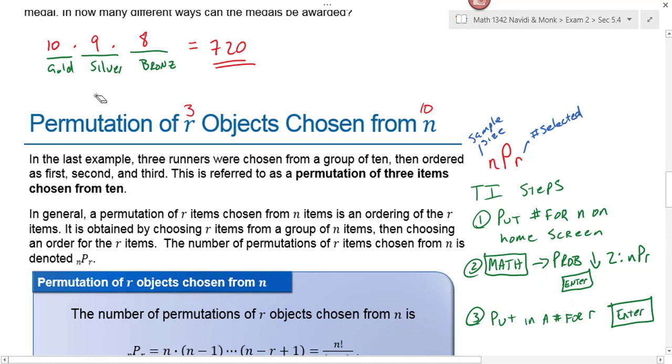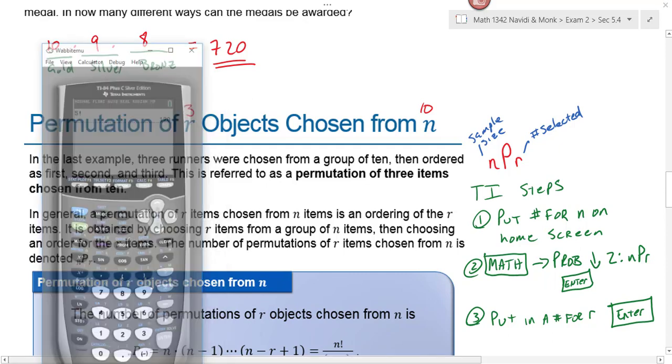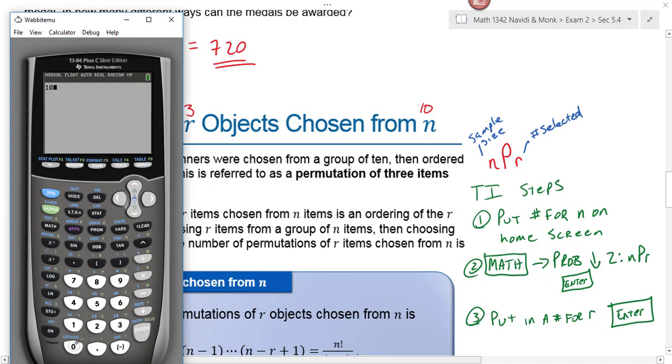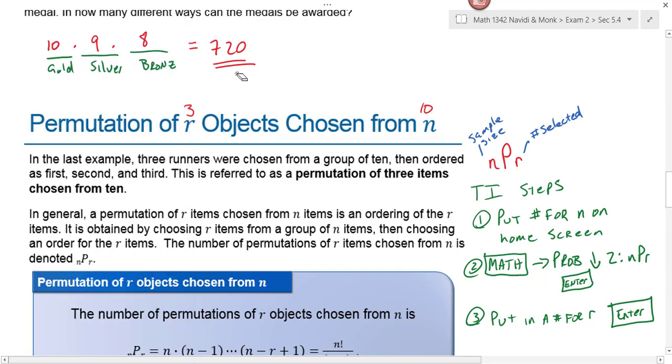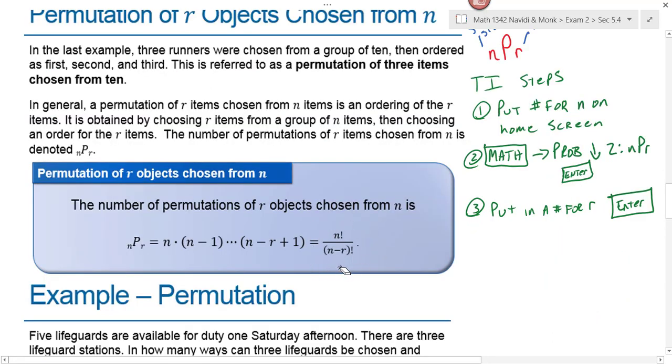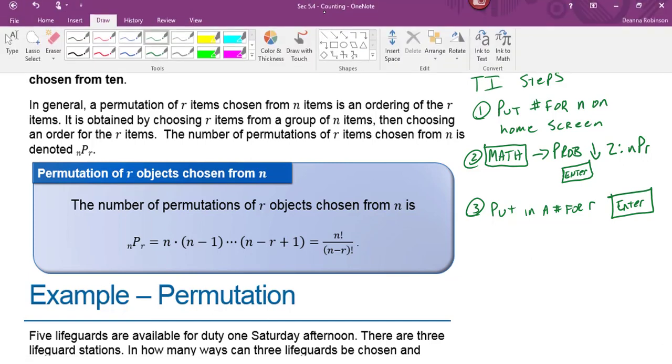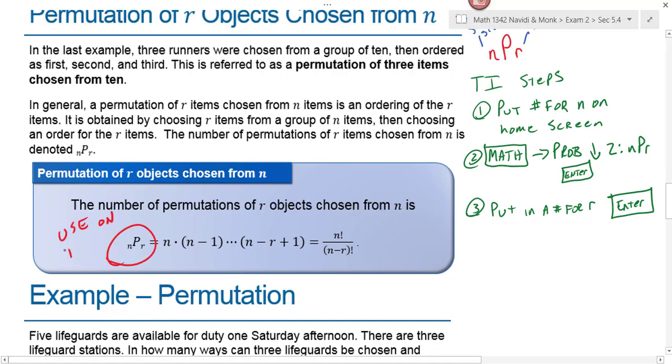So let's just double-check this last example on our calculator where n is 10 and r is 3. We got 720, so let's go to our calculator. We put 10 on the home screen, hit math, go over to probability. Number two here is the permutation, and then we are selecting three at a time, and we did get 720, so it worked out. 10 selected three at a time was 720. This formula is actually the formula with factorials on how you would calculate permutations. Do not worry about putting this formula on your formula sheet. We are just going to use this on the TI calculator. You don't have to worry about writing that on your formula sheet because it's already pre-programmed in your calculator.